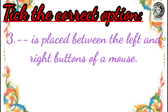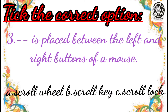Question number 3: Dash is placed between the left and right buttons of a mouse. Option A: scroll wheel, Option B: scroll key, and Option C: scroll lock.